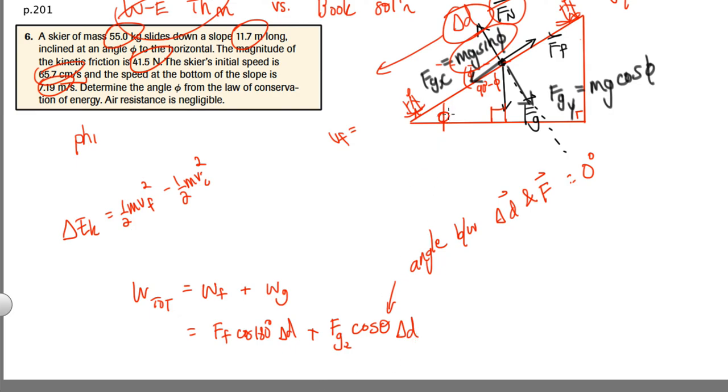Now, you might be wondering, what about the angle of the hill? But that's already included in this sine phi here. So this is going to give me, let's just go through this, Ff is 41.5, cos 180 is minus 1, and the delta D is 11.7. Fgx is going to be 55 kilograms times g, 9.8, times the sine of 5, cos theta is going to be cos 0 degrees. So this was the force here written as a component. That's the cos theta in the work formula. And the delta D is 11.7. So I'm not going to go any further with this.